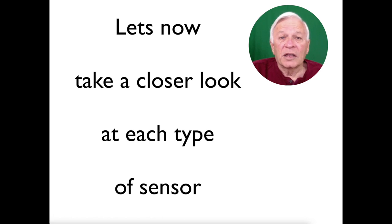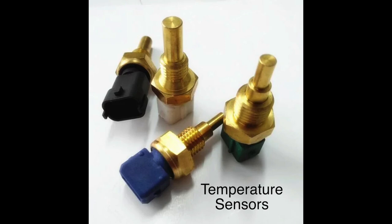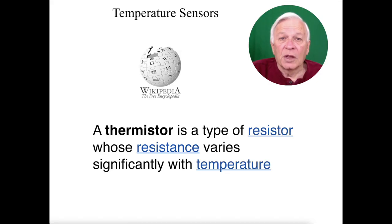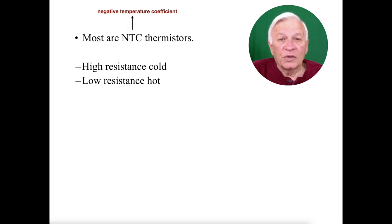Now, let's take a closer look at each type of these sensors. Temperature sensors. They are often referred to as thermistors, and according to Wikipedia, a thermistor is a type of resistor whose resistance varies significantly based on the temperature it reads. Most of these sensors are NTC thermistors, which stands for negative temperature coefficient.